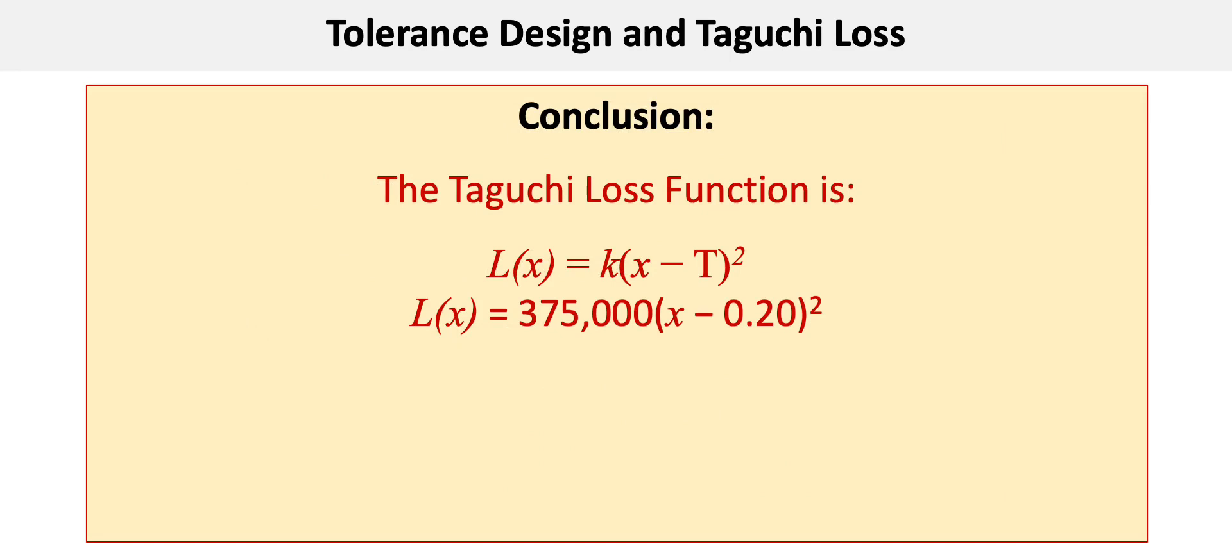The conclusion here is that for deviation of 0.02 inches from the target specification, the Taguchi loss function is L(x) equals 375,000 times (x minus 0.20) squared.